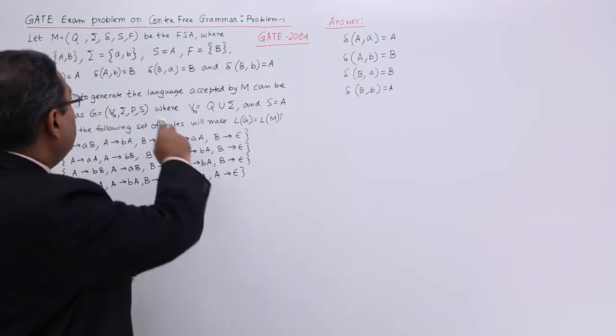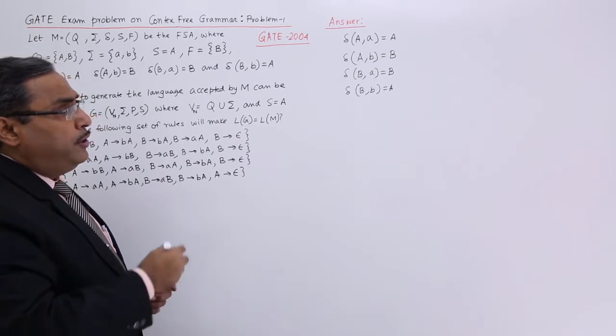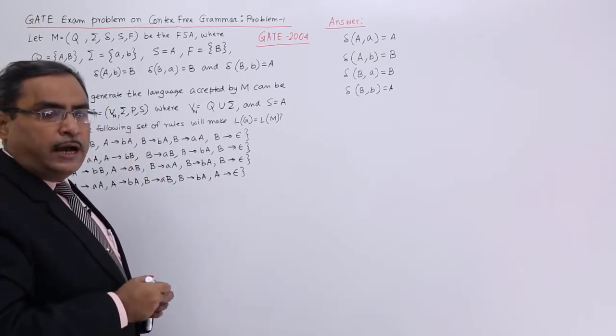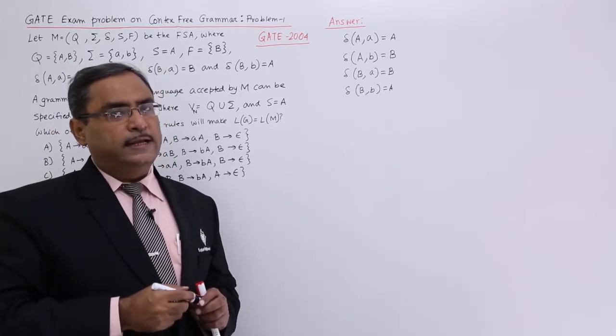Here I have written these four transitions from the question paper. Against each and every transition, I shall be writing the respective production rule. How to write the production rules against the transitions?